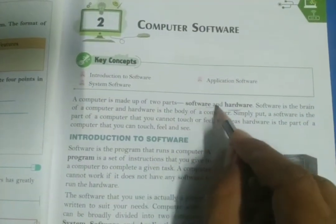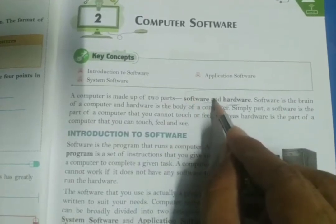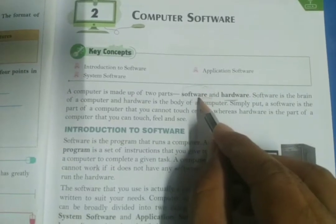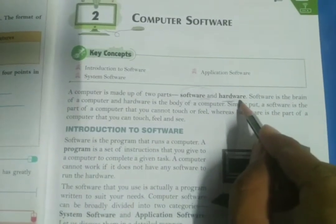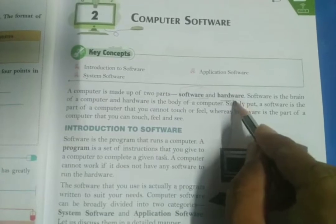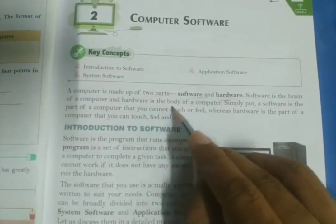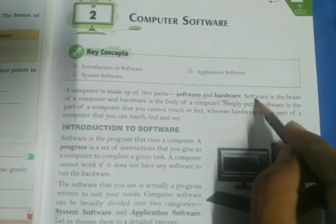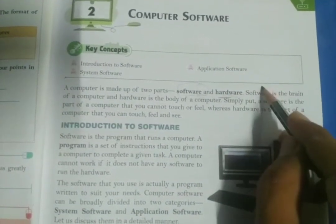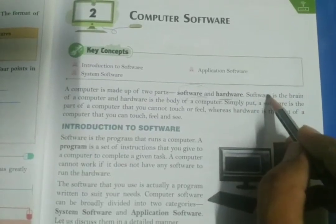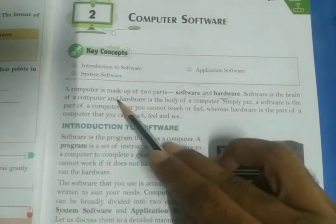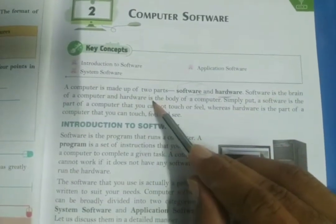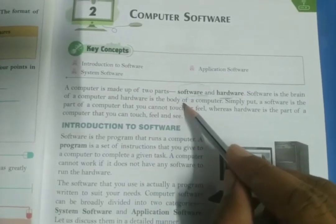Software is the non-tangible part of the computer — it means you cannot touch or feel it — and hardware is the tangible part of the computer. Software is the brain of the computer and hardware is the body. Whatever operation you want to perform, that operation is only performed by the software. The software is written to perform operations.